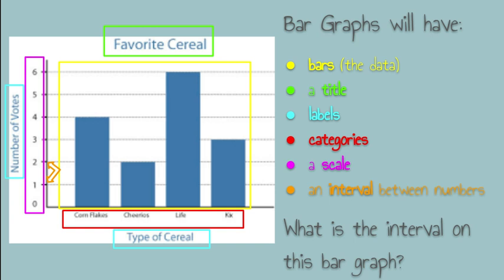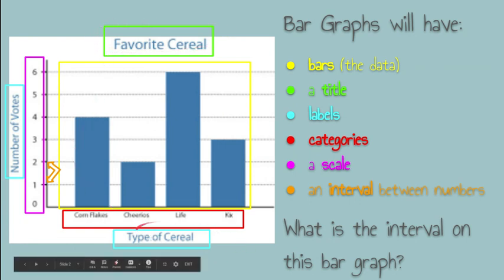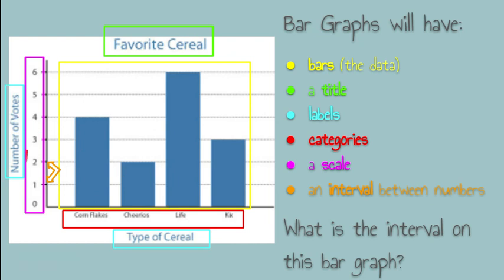Bar graphs will have several different things. They'll have bars that you can see here. They'll have a title — this one's titled 'Favorite Cereal.' They'll have labels like 'type of cereal' and 'number of votes.' They'll have categories: Cornflakes, Cheerios, Life, and Kicks, and they'll have a scale with an interval between numbers. So remember, interval — we looked at that with thermometers — that's how much it goes up each time. This one is going up by ones: 0, 1, 2, 3, and so on.